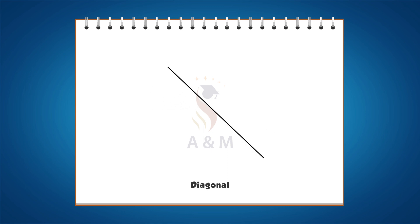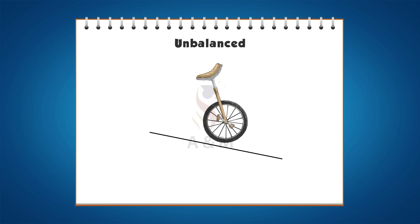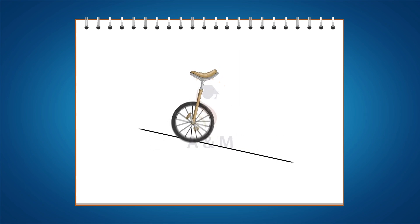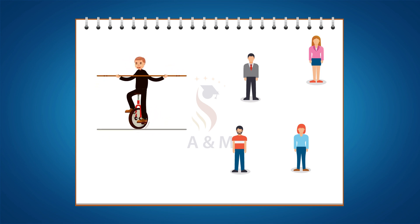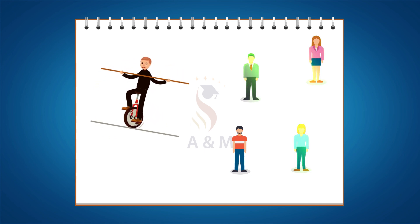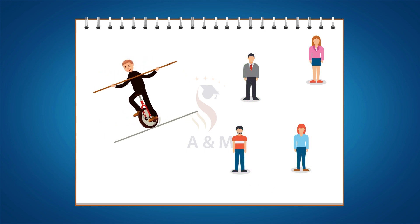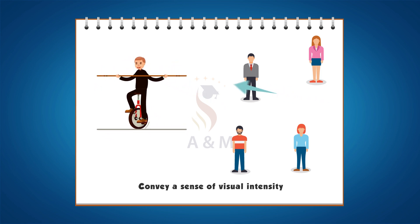Next, diagonal. Diagonal lines are angled and can either be an incline or decline slope. Artistically, they can be described as unbalanced and are considered neither horizontal nor vertical. Diagonal lines demand a lot of attention from viewers. They are filled with energy and are considered emotionally active. They also express movement and depth and convey a sense of visual intensity.